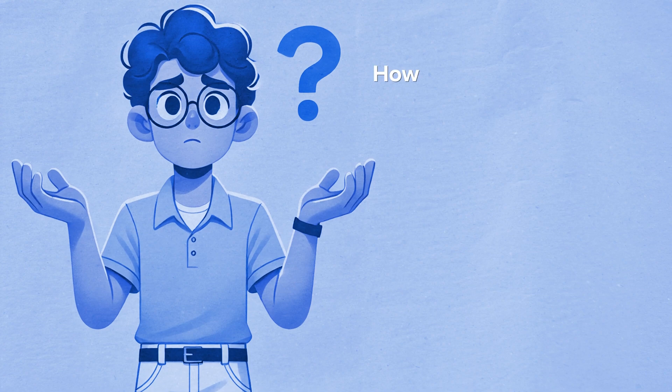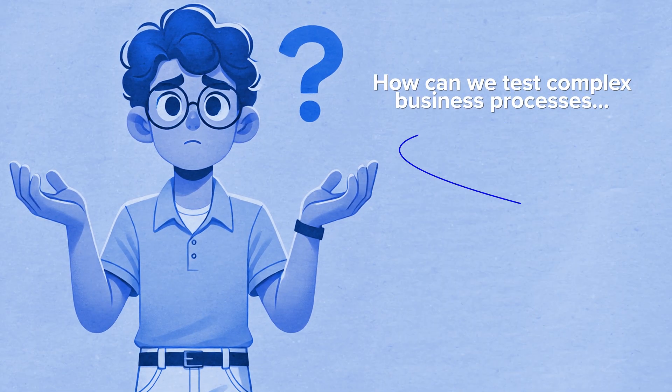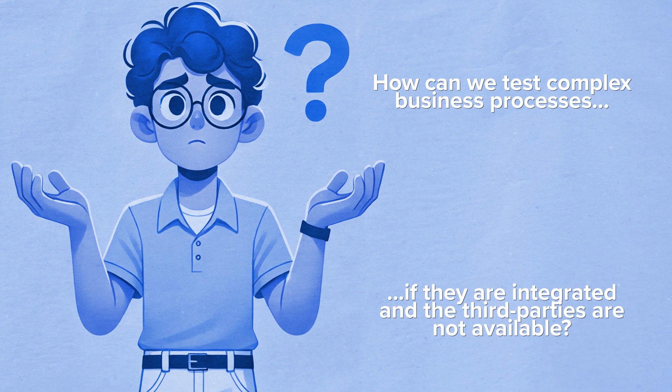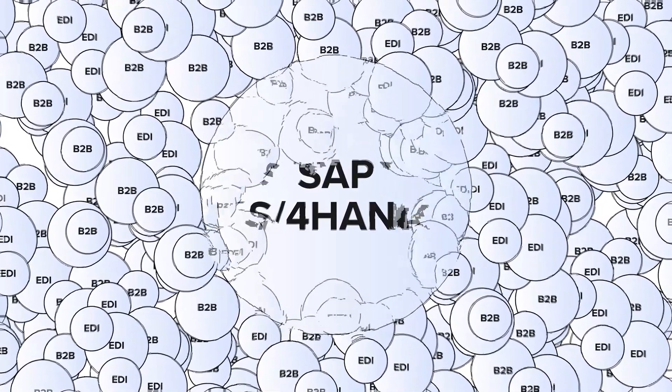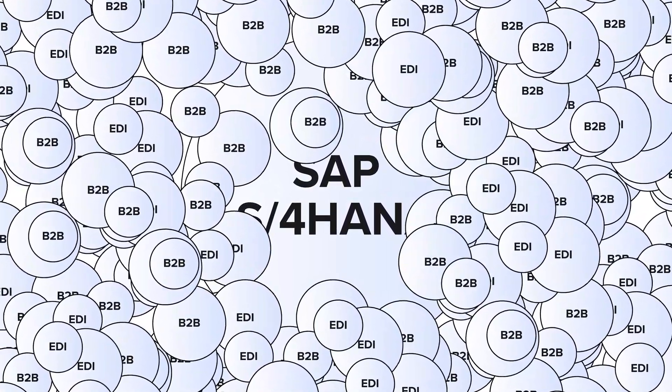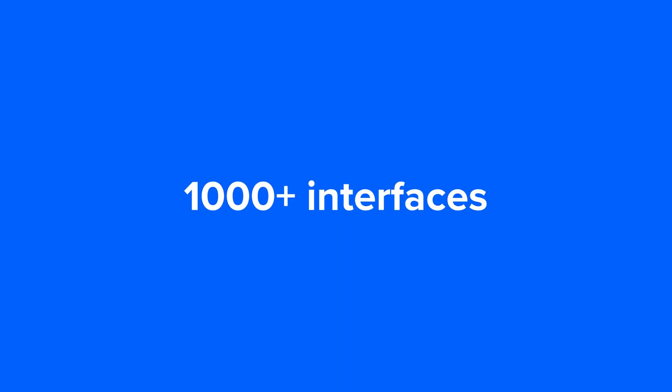Even when partners are available, quite often their test environment's data is not exactly as you would expect. Because of that, a lot of companies struggle with testing complex SAP business processes, especially ones highly integrated with other business systems or partners. The sheer number of those partners and systems is an important factor, since there are just so many of them — it's not unlikely to see an enterprise having over thousands of these connections.